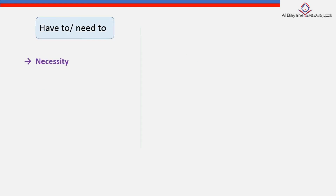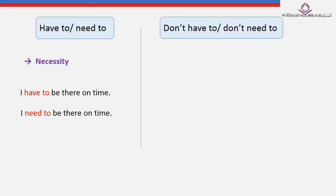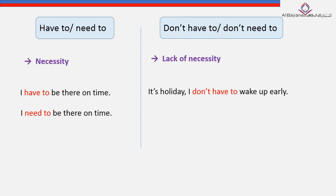'Have to' or 'need to' are used to express necessity. For example: 'I have to be there on time,' or 'I need to be there on time' — meaning it's necessary to be punctual. 'Don't have to' or 'don't need to' are the negative forms and indicate lack of necessity. For instance: 'It's a holiday — I don't have to wake up early,' or 'It's sunny outside — you don't need to wear a jacket.'